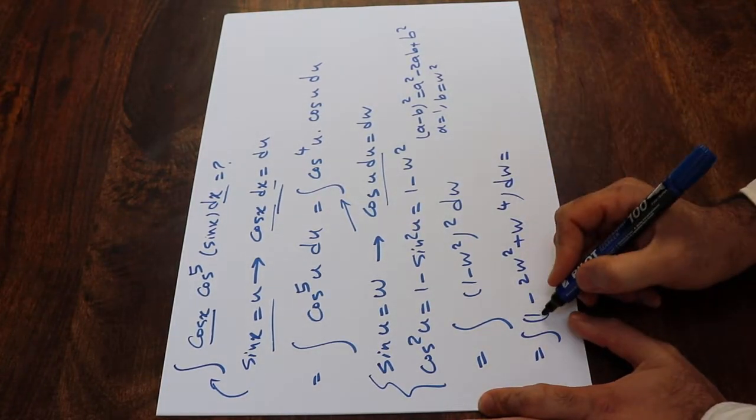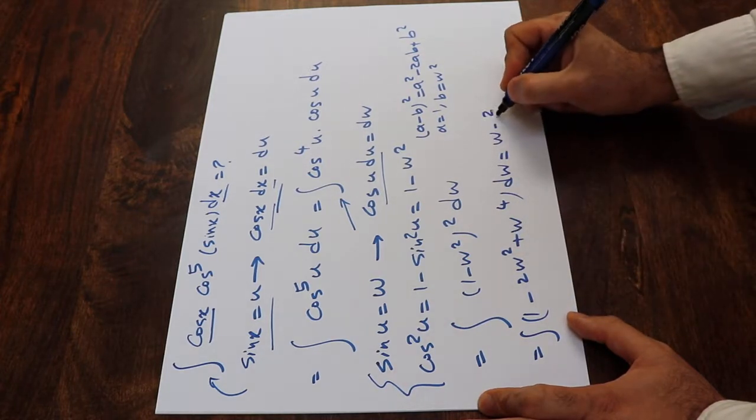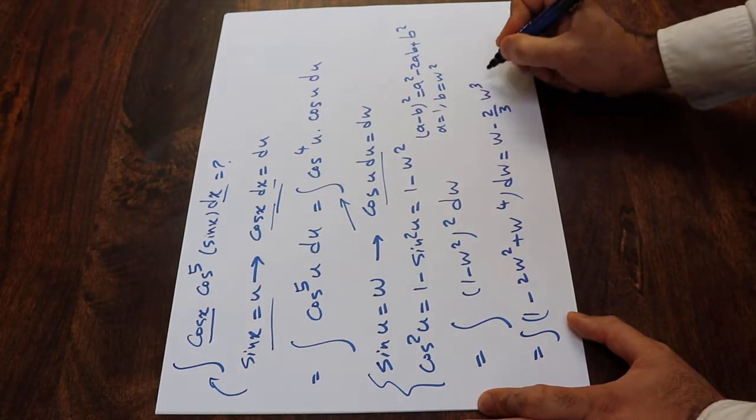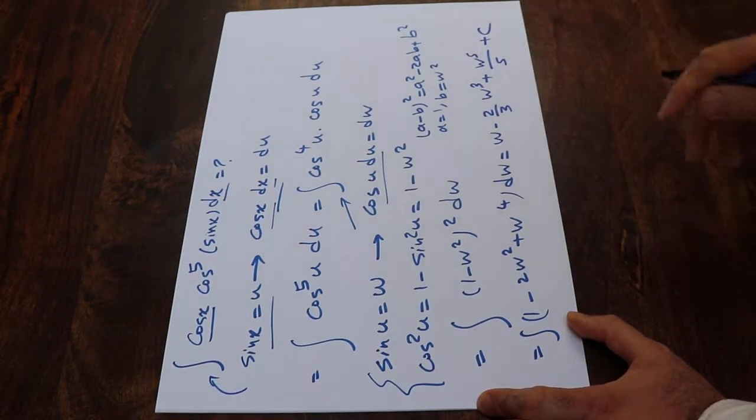This integral will be equal to w minus 2w³/3 plus w⁵/5 plus c.